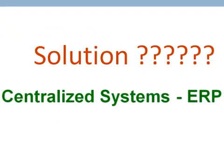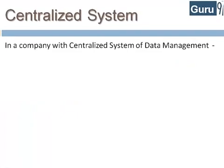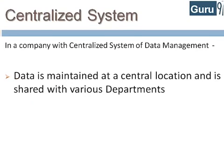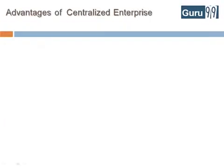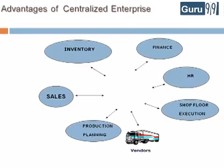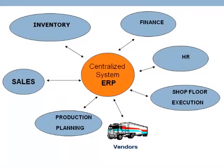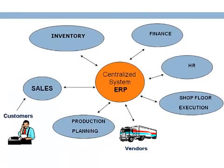Well, the solution lies in centralized systems, that is, ERP. In a company with a centralized system of information and data management, data is maintained at a central location and is shared with various departments. Departments have access to information or data of other departments. Let's look at the same business process again to understand how a centralized enterprise system helps overcome problems posed by a decentralized enterprise system. In this case, all departments update a central information system. When a customer approaches the sales team to buy a product on an urgent basis, the sales team has real-time information access to the products in inventory, which is updated by the inventory department in the centralized system.